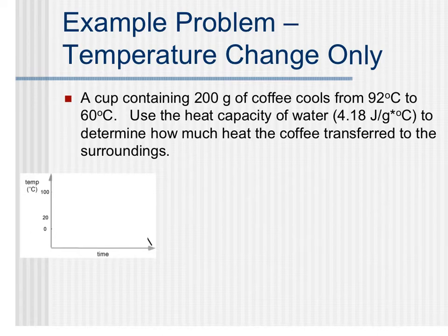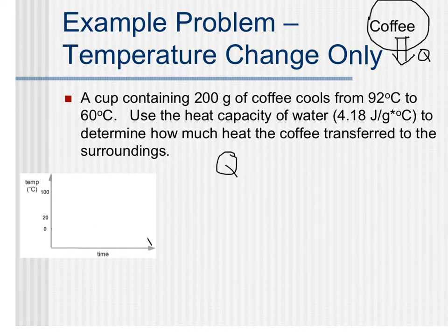In this problem, we've got a cup containing 200 grams of coffee that cools from 92 degrees to 60 degrees. So if I think about our energy bar charts, we're looking at a cup of coffee, and that cup of coffee is our system. The temperature is dropping, so the energy is leaving the system. We've been labeling this little arrow with the letter Q, because what we're going to calculate now is Q, the amount of energy that's entering or leaving our system. In this case, the energy will be leaving our cup of coffee.